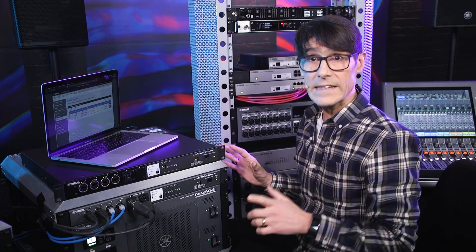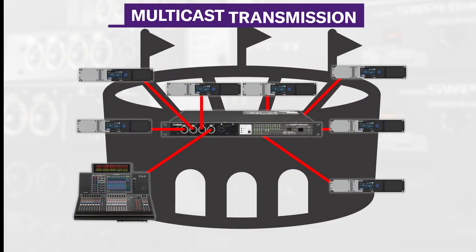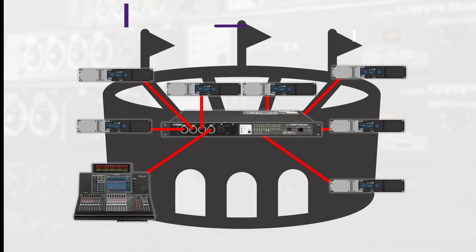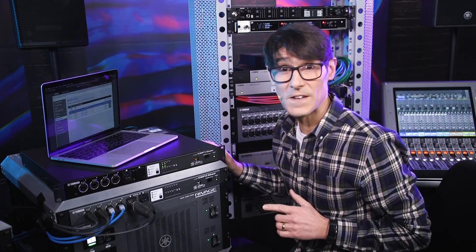Normally there's very little multicast data in Dante systems, but sometimes it is needed when the same audio signals need to reach many devices — like the output of a mixer reaching all the amplifiers surrounding a sports stadium. So IGMP snooping is a helpful switch feature.